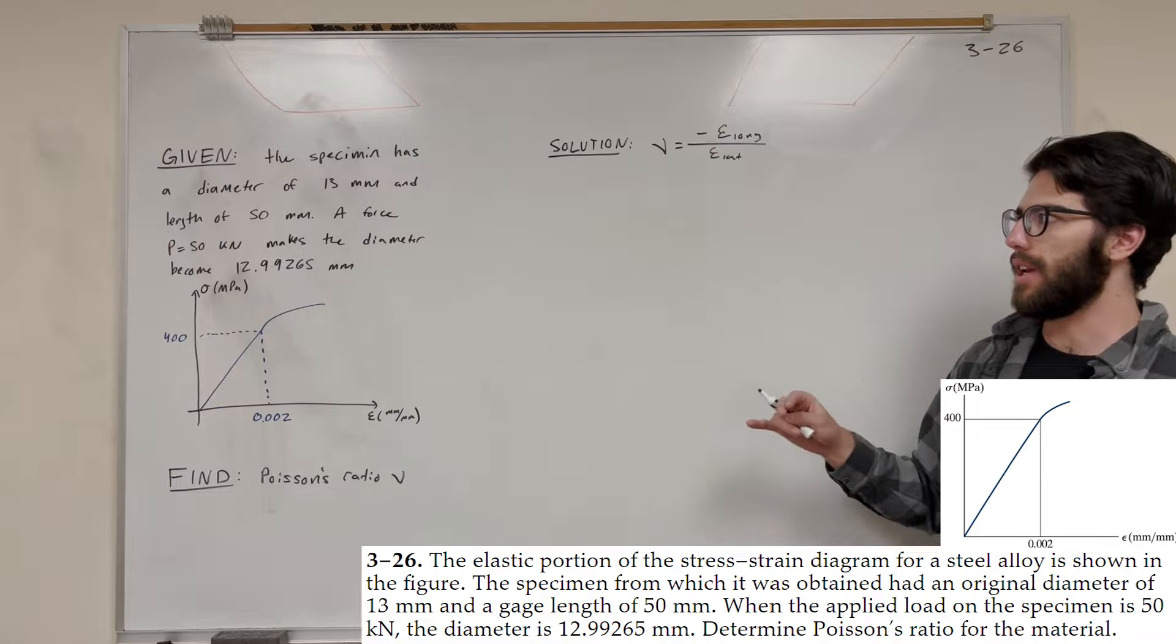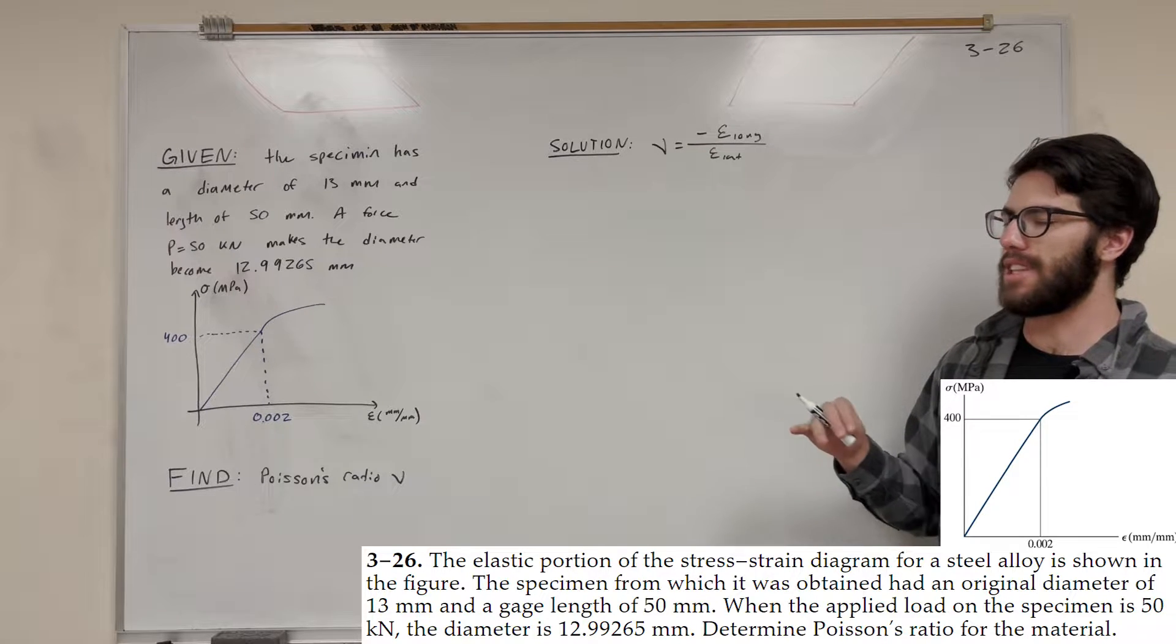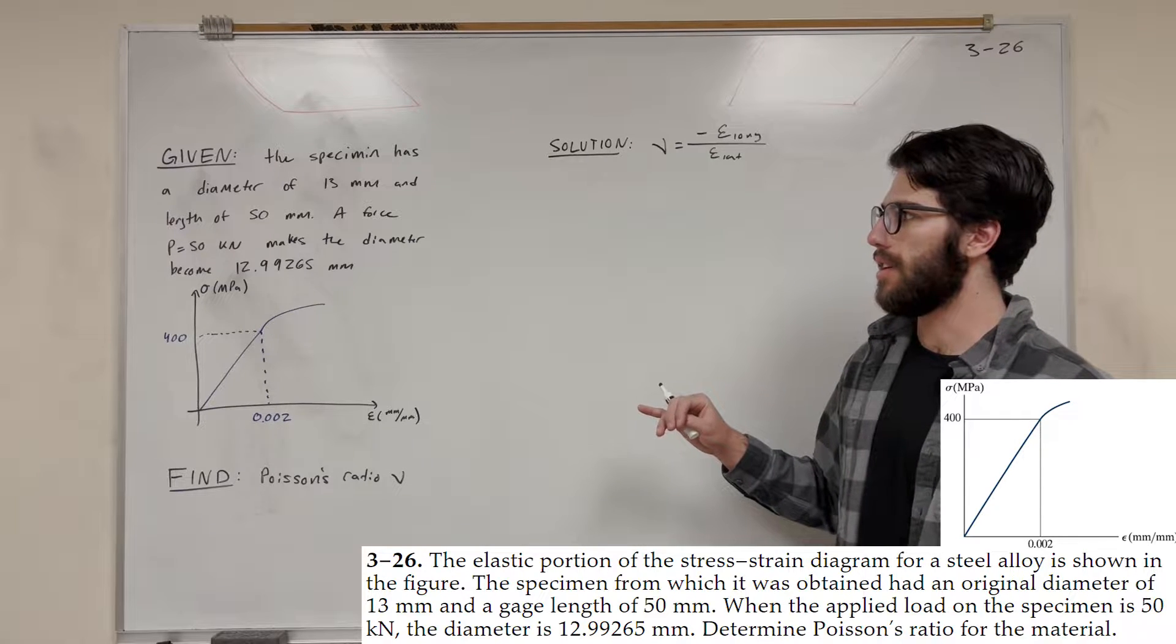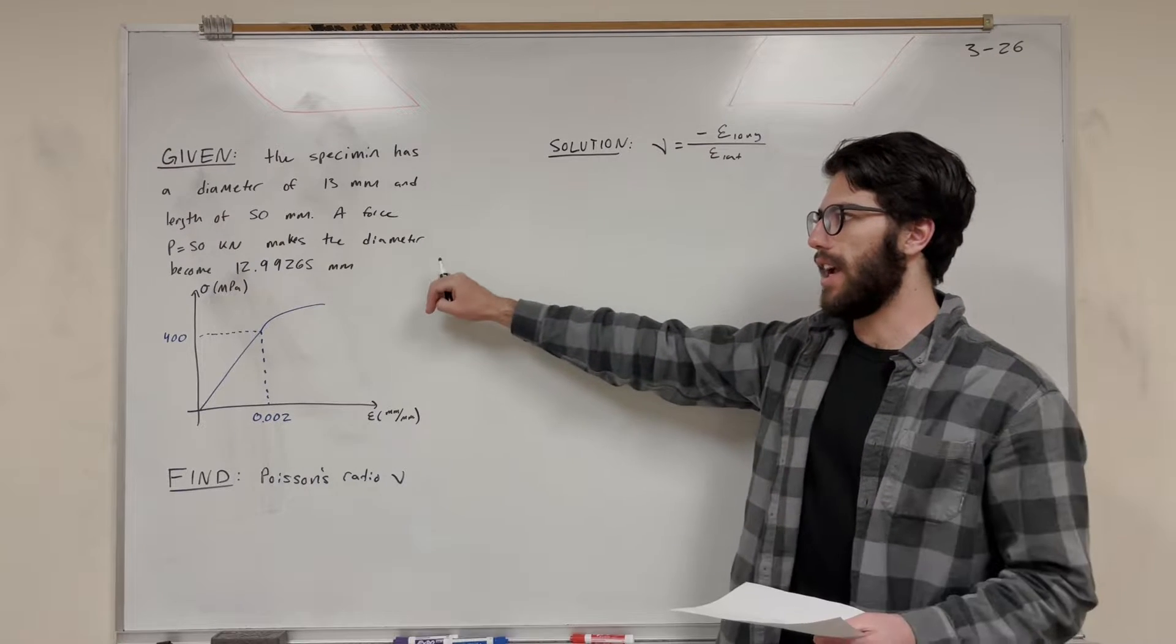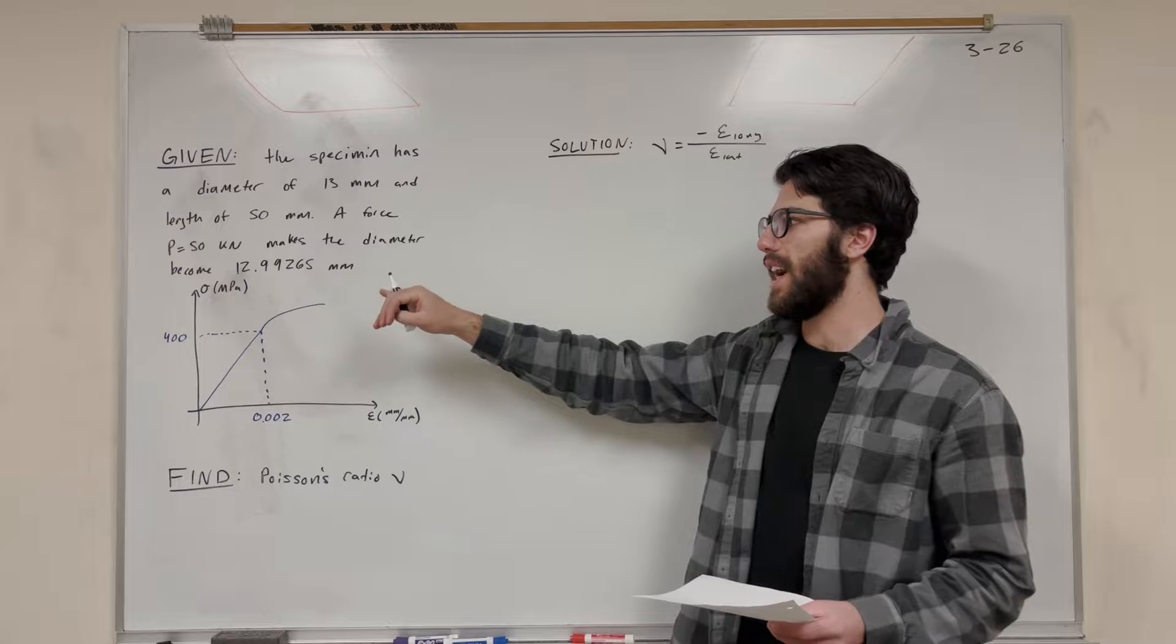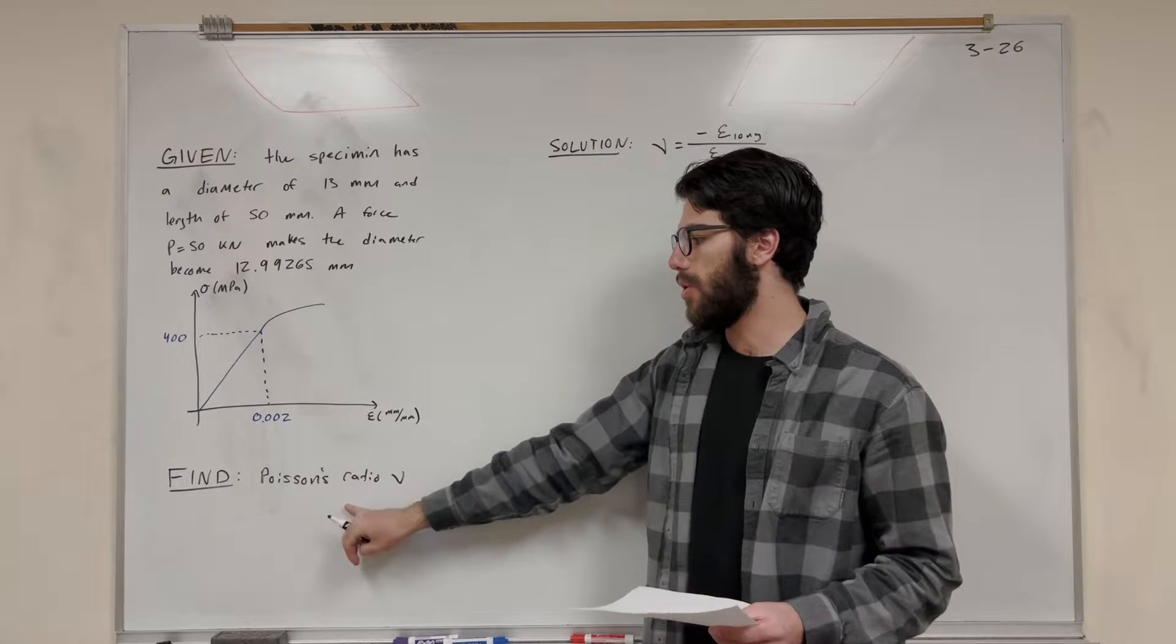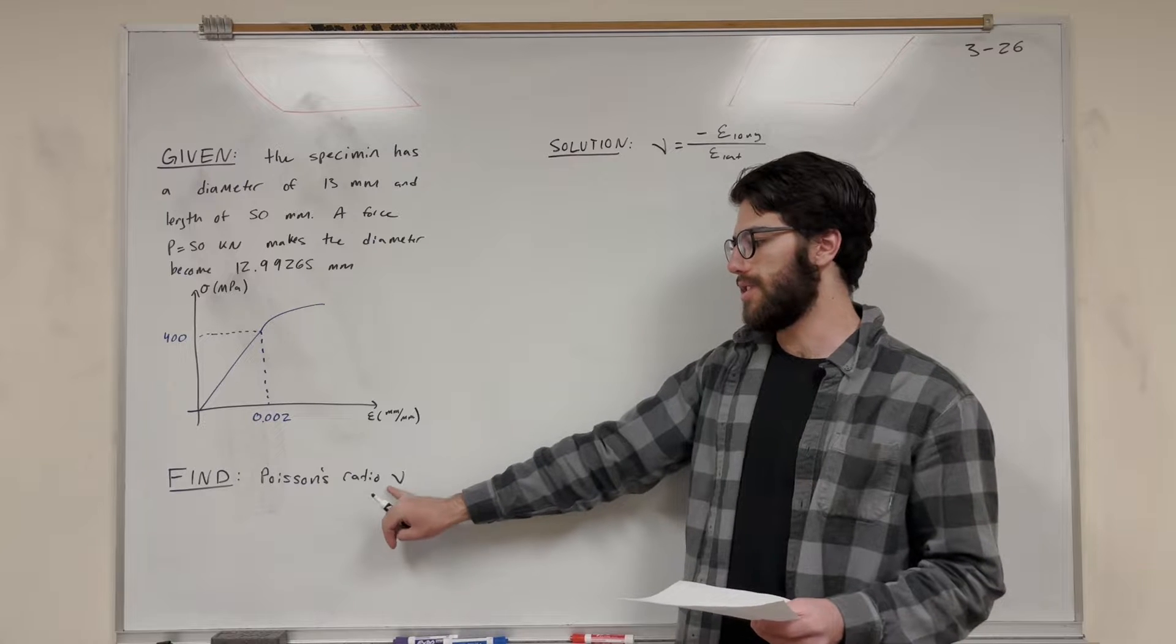So basically we're given a specimen and we know that its diameter is 13 millimeters and its length is 50 millimeters. And then we're told that a force of 50 kN makes the diameter shrink to 12.99 millimeters. We're also given the stress-strain diagram and are told we need to find Poisson's ratio, which is this V symbol here.